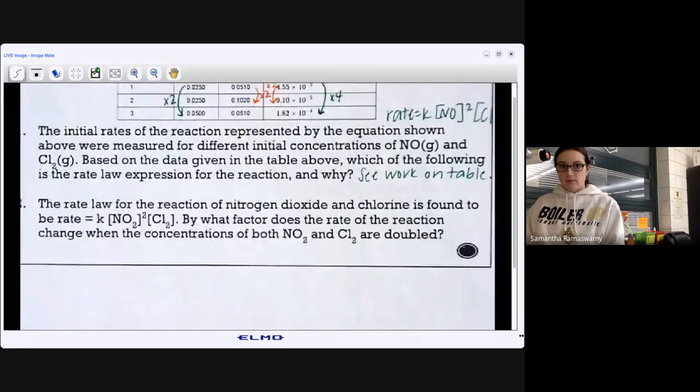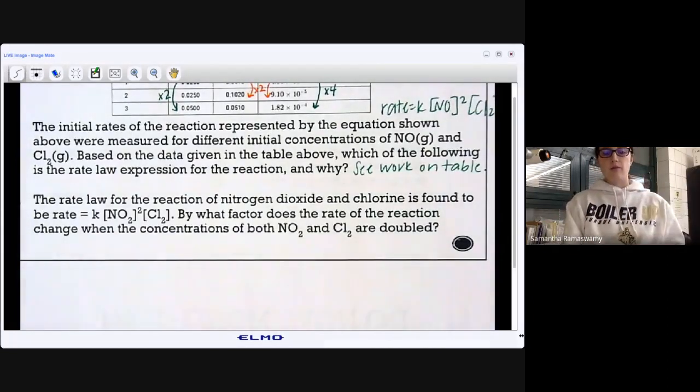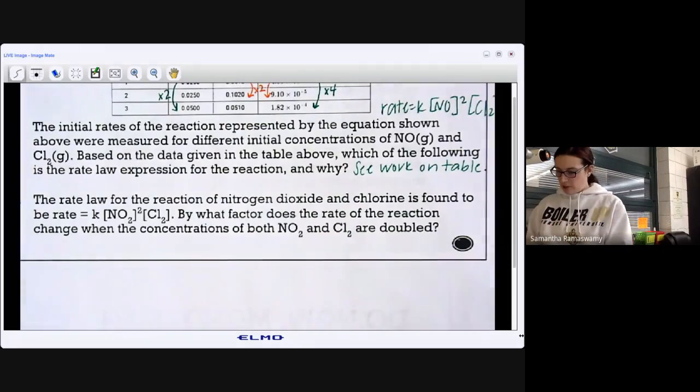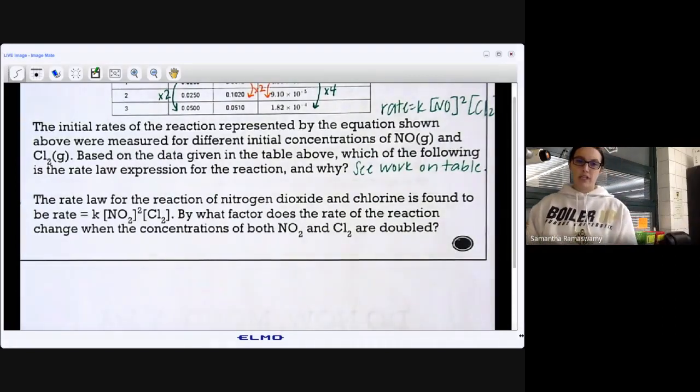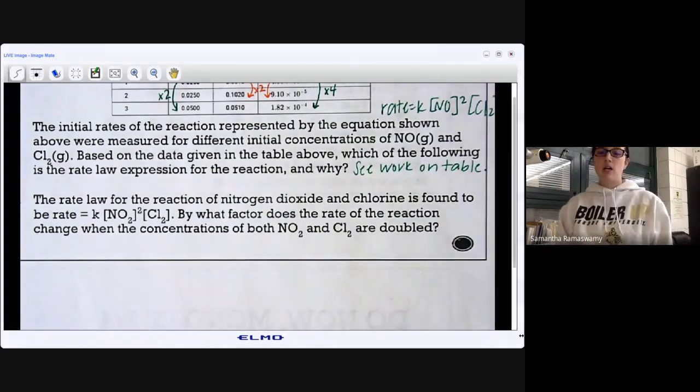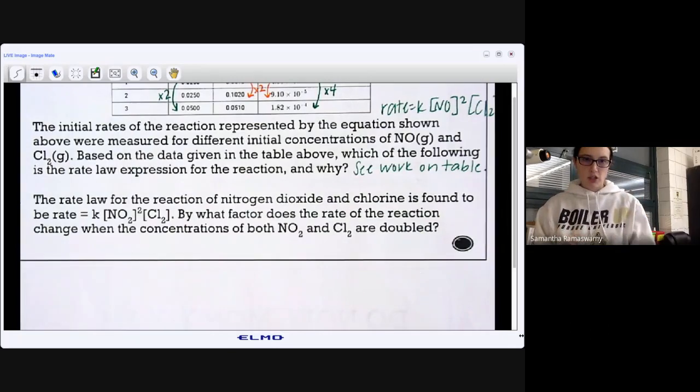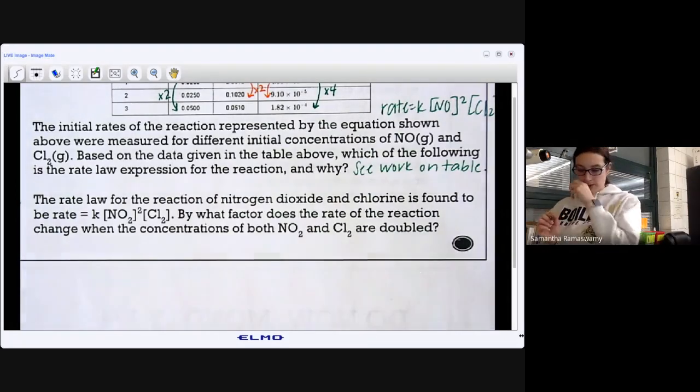So number two. So this has nothing to do with number one. These are completely different problems. So the rate law for the reaction of nitrogen dioxide and chlorine is found to be rate equals K times the concentration of NO2 squared times the concentration of Cl2. By what factor? So it could be two times, three times, four times. By what factor does the rate of the reaction change when the concentrations of both are doubled? So here's a simple way to look at this. And this might look familiar. This was the most missed question on the quiz.